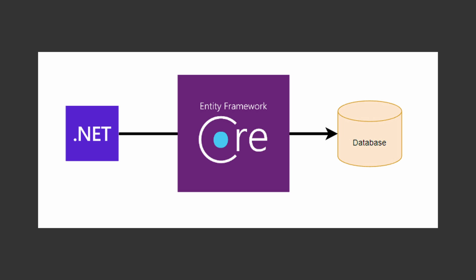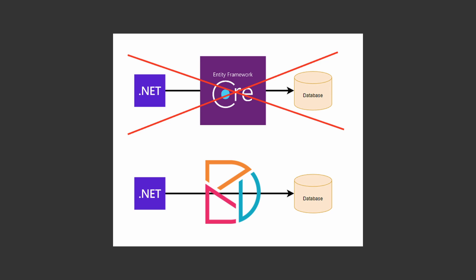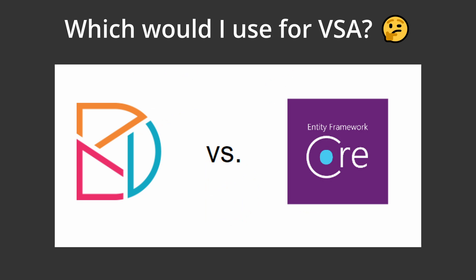Last time, we used NAD Framework to connect our vertical slice architecture application to a database. However, we ran into some quirks with fitting NAD Framework into the vertical slice architecture paradigm. So this time, instead of using NAD Framework, let's use the Dapper micro-ORM to connect our application to a database, and we're going to see if Dapper has a more pleasant experience with vertical slice architecture.